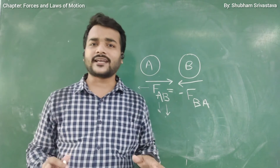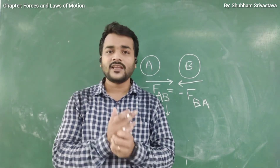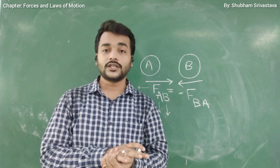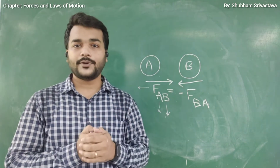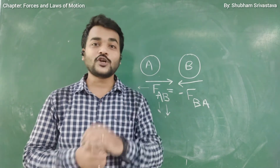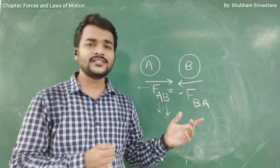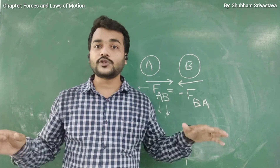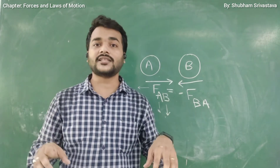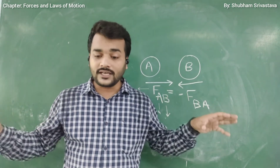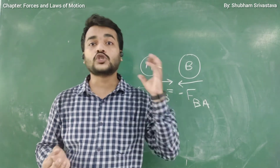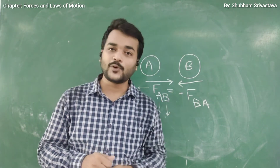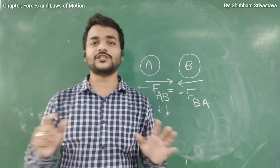Now let's understand some practical applications of Newton's third law. One example is rockets. You see this rocket — when the fuel burns, a thrust is applied downward onto the atmosphere. Due to this action, the atmosphere also applies an upward force onto the rocket as a reaction. With the help of this reaction force, the rocket moves in the upward direction.